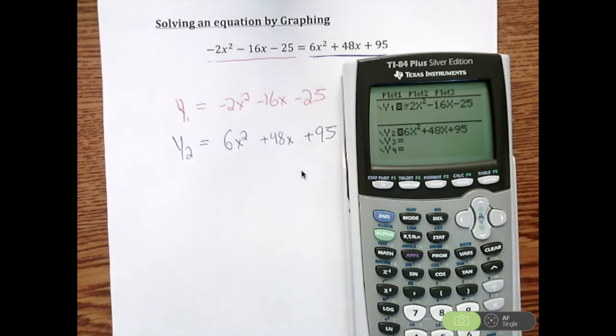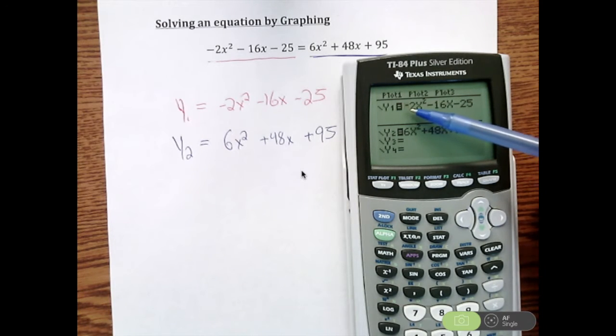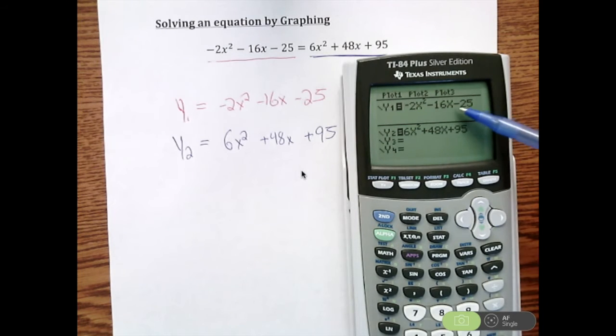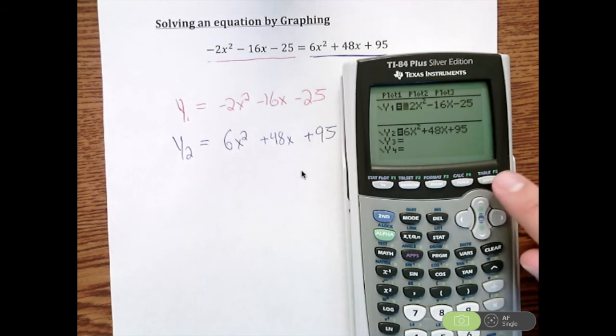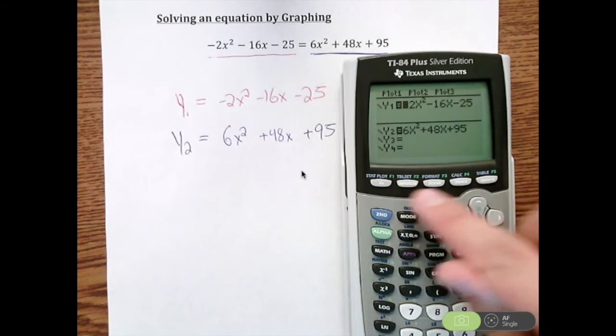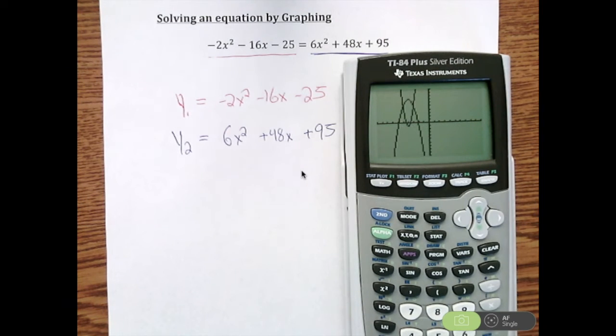So for this video, I already plugged it in, so you don't have to waste time watching me plug all that in. Be very careful. In front of the 2, let's use the negative sign and not the subtraction sign. Everything else is subtractions there. So after you hit y equals and plug it all in, we're going to go to graph this. And here's what our graph looks like.